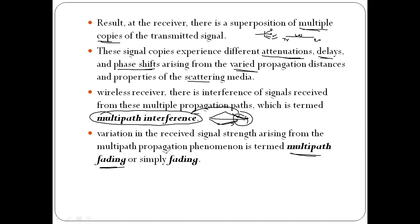Multipath fading is a significant problem in wireless communication. In order to overcome this fading problem, there are different types of fading, and understanding the fading concept is essential to addressing it.